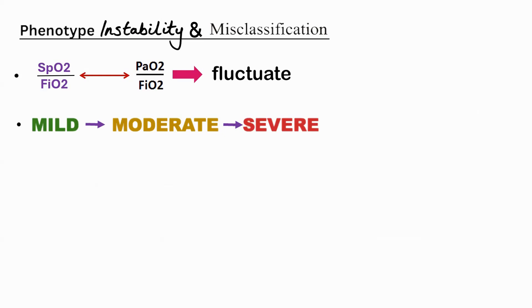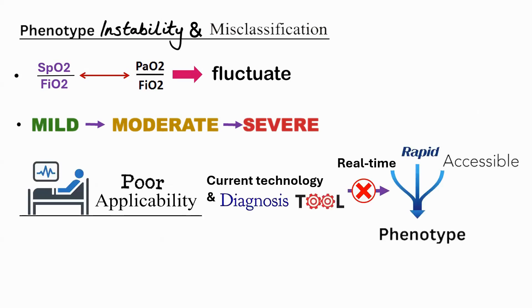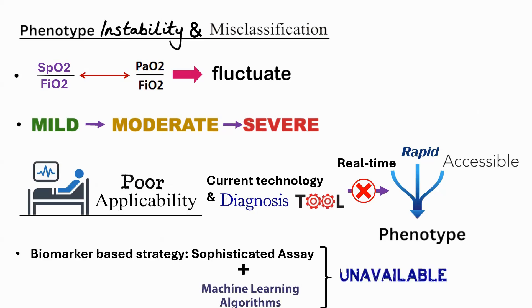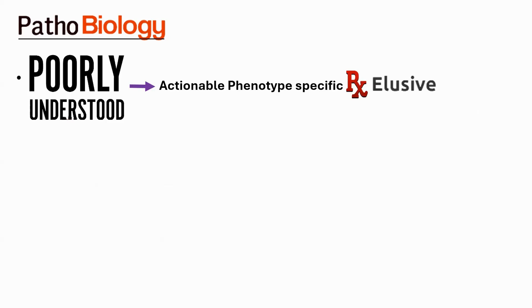It is hard to put patients into two baskets and say this is one phenotype and that is another. There are no bedside tools available — no real-time bedside tool to identify phenotypes, no rapid tests that are accessible. Biomarker-based strategies may require sophisticated assays like checking interleukin levels or surfactant levels. Machine learning algorithms are currently unavailable to determine which phenotype ARDS belongs to, and the pathobiology of different phenotypes is poorly understood.